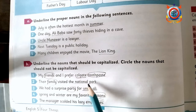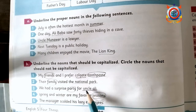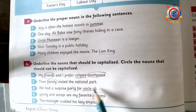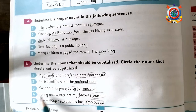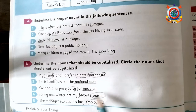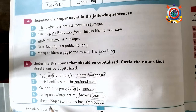Third sentence: 'We had a surprise party for Uncle Ali.' Fourth sentence: 'Spring and Winter are my favorite seasons.' Circle season, and underline Spring and Winter. Last sentence: 'The manager scolded his lazy employees.' Here manager and employees are two common nouns.